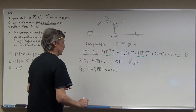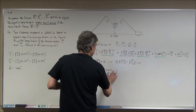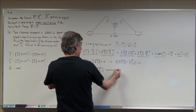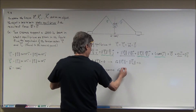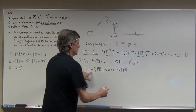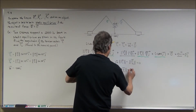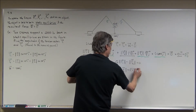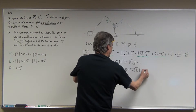I'm also going to throw the 2,000 on the other side, which is going to become 4,000. I get the square root of 2 times the magnitude of vector T sub 1 plus the square root of 3 times the magnitude of vector T sub 2 is equal to 4,000.